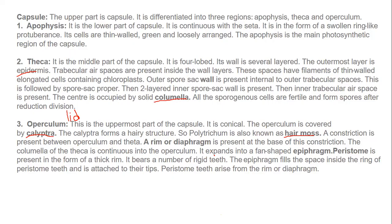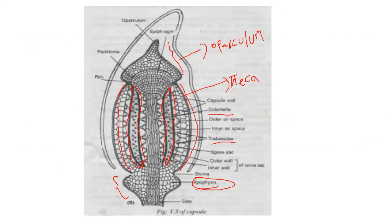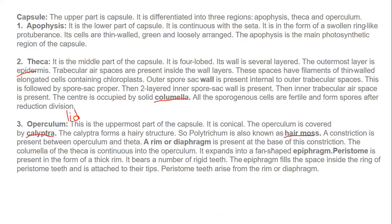In between the operculum and the theca, you can see a constriction. In this constriction you can see a rim or diaphragm — it is like a screw-like joint, like a lid on a jug. This is the region which helps in attaching the operculum with the theca of the capsule.